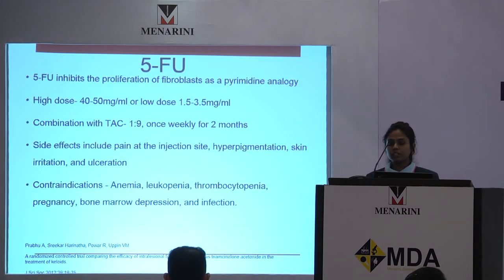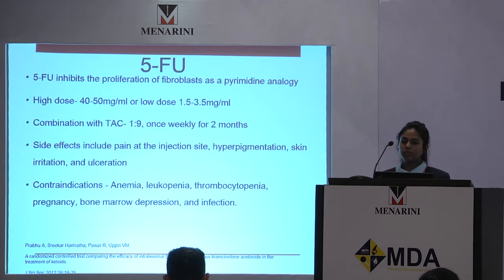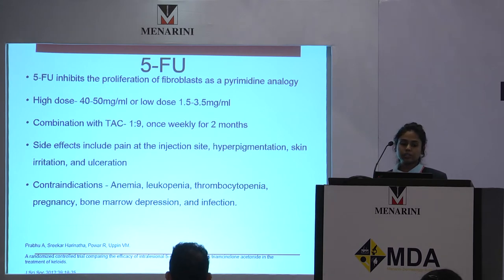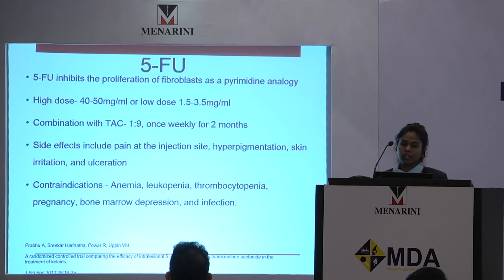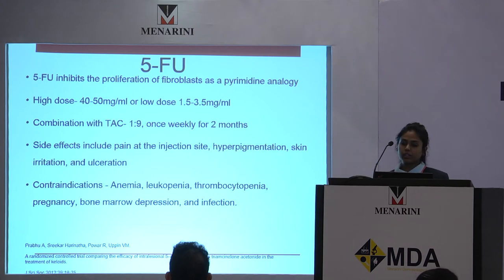5-fluorouracil is a time-tested drug. It inhibits the proliferation of fibroblasts and is given in high doses like 40 to 50 milligrams per ml. It can be given in combination with triamcinolone acetonide once weekly for about two months. Side effects like pain at the injection site, hyperpigmentation, and ulceration have to be kept in mind. It is contraindicated in anemia, leukopenia, and pregnant women.